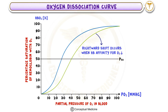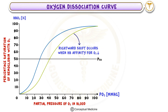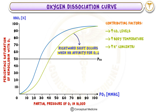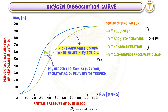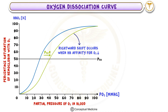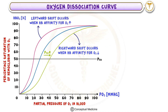A rightward shift occurs when hemoglobin's affinity for oxygen decreases, meaning it releases oxygen more easily to tissues. Factors that cause this include an increase in carbon dioxide levels, body temperature, hydrogen ion concentration (which lowers the pH), and higher levels of 2,3-bisphosphoglycerate (2,3-BPG). These conditions are often present in metabolically active tissues where oxygen demand is higher. The rightward shift increases the P50 value, facilitating oxygen delivery to these tissues.